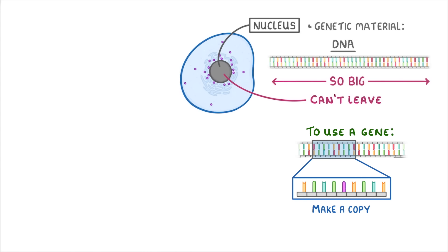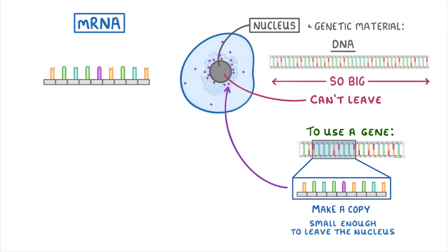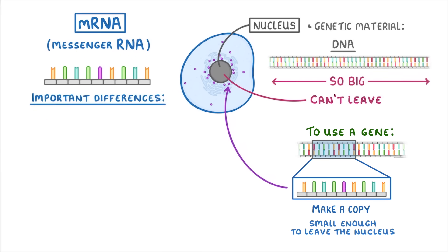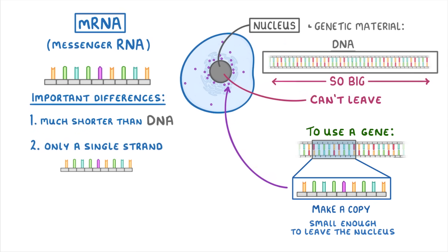Now, this copy we're talking about is mRNA, which stands for messenger RNA, and is just a copy of a single gene. The structure of mRNA is mostly similar to DNA, but it does have a few important differences that you need to know about. For one, it's much shorter than DNA because it's only a single gene long. It's also only a single strand rather than a double strand like DNA. And finally, instead of containing the base thymine, it contains uracil.